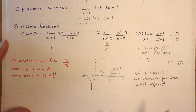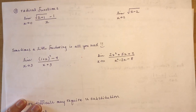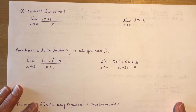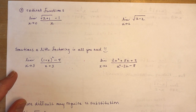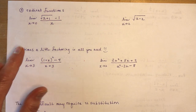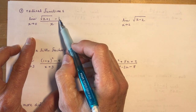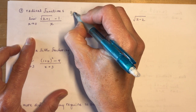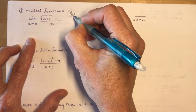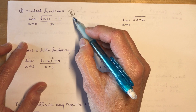Let's look at radical functions. You want to plug in that value and see if it works. The limit as x approaches 0 — I have 1 minus 1, which is 0 over 0. That's the indeterminate form — do more work. Do not leave that as your answer on a test.